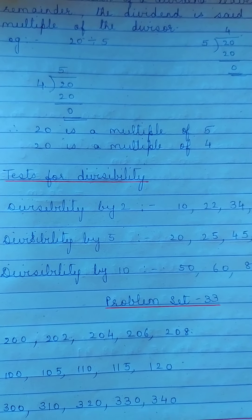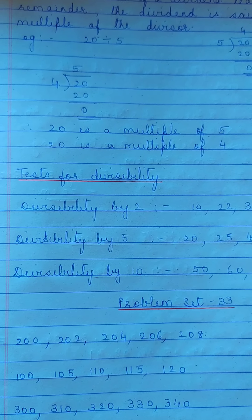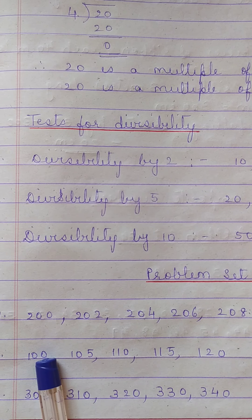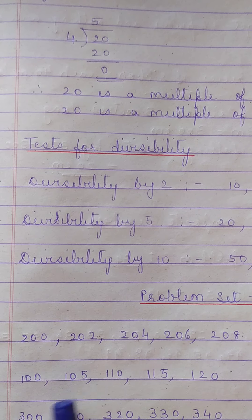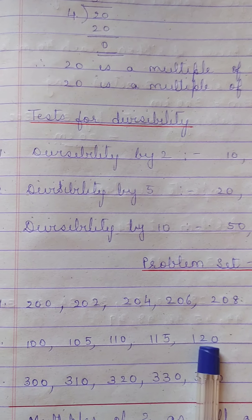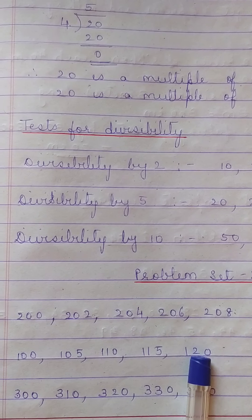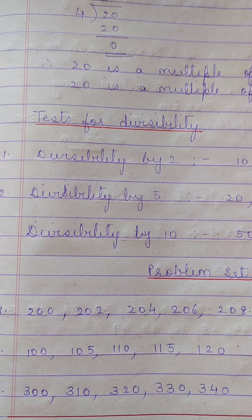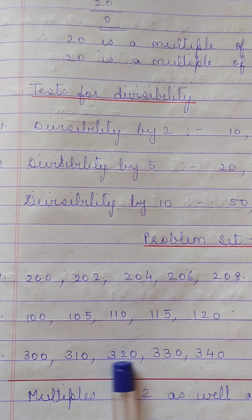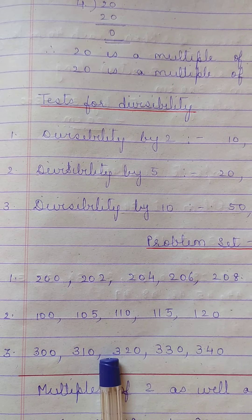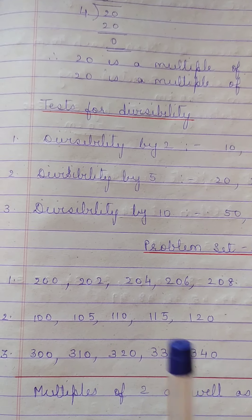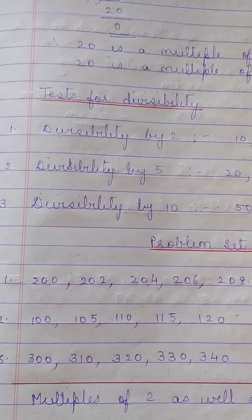The second part: write 5 three-digit numbers that are multiples of 5. They must have 0 or 5 in the units place: 100, 105, 110, 115, 120. The third part: multiples of 10 must have only 0 in the units place: 300, 310, 320, 330, 340. You can write any other valid numbers as well.